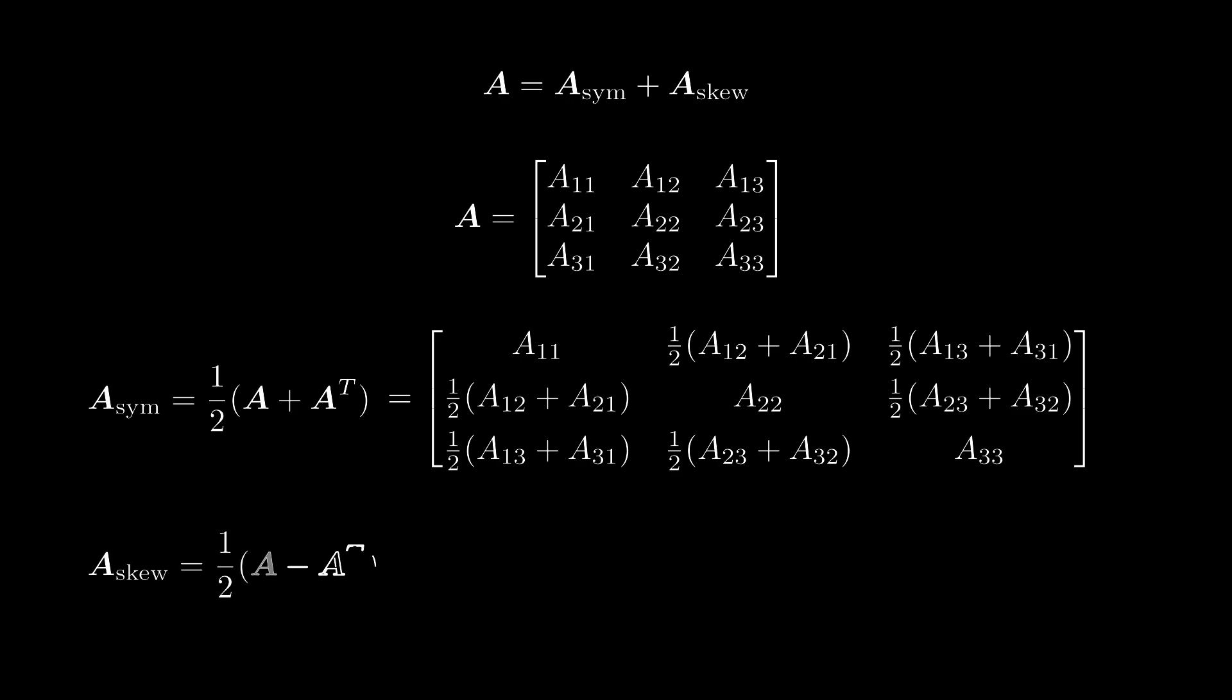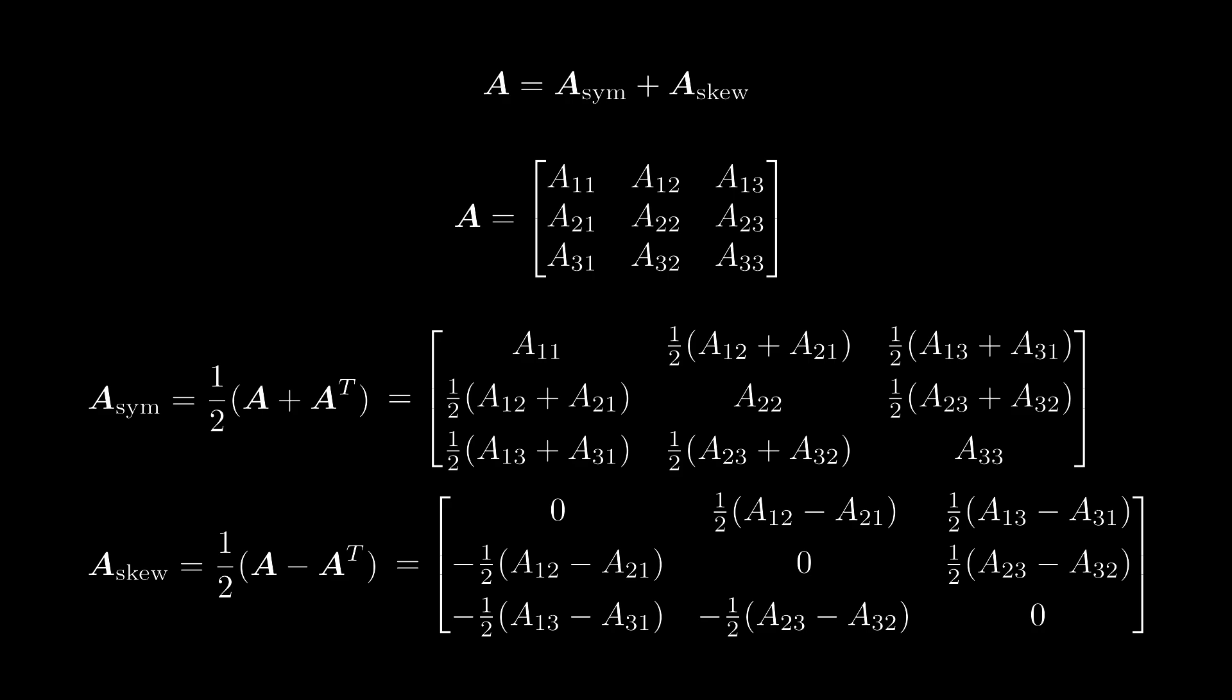The formula for the skew-symmetric part is one half times A minus A transpose. Again, expanding the formula, we can see why this is called the skew-symmetric part of A. The upper right and lower left off-diagonal elements of the skew-symmetric part are equal in magnitude, but change in sign.